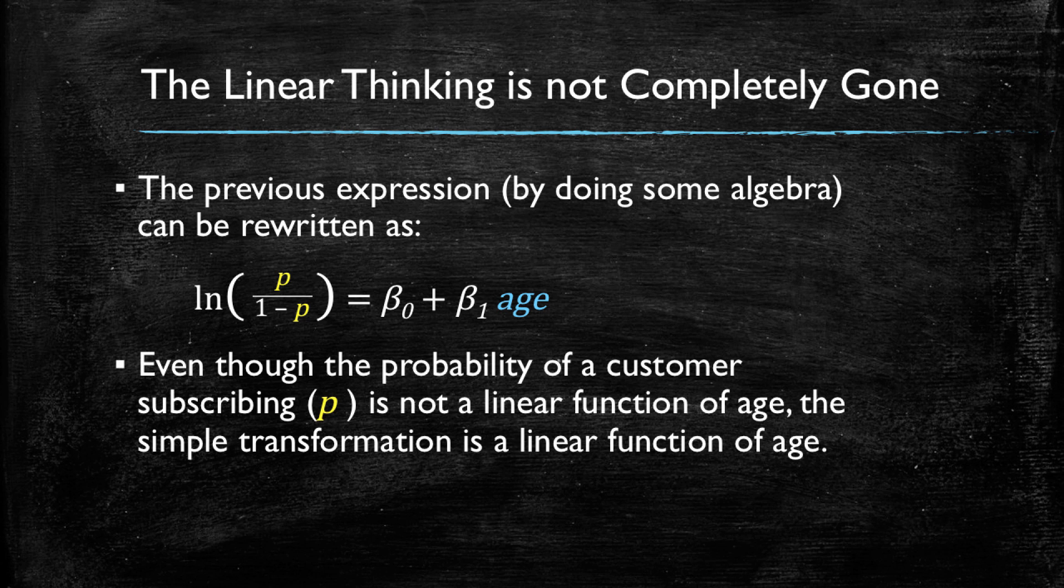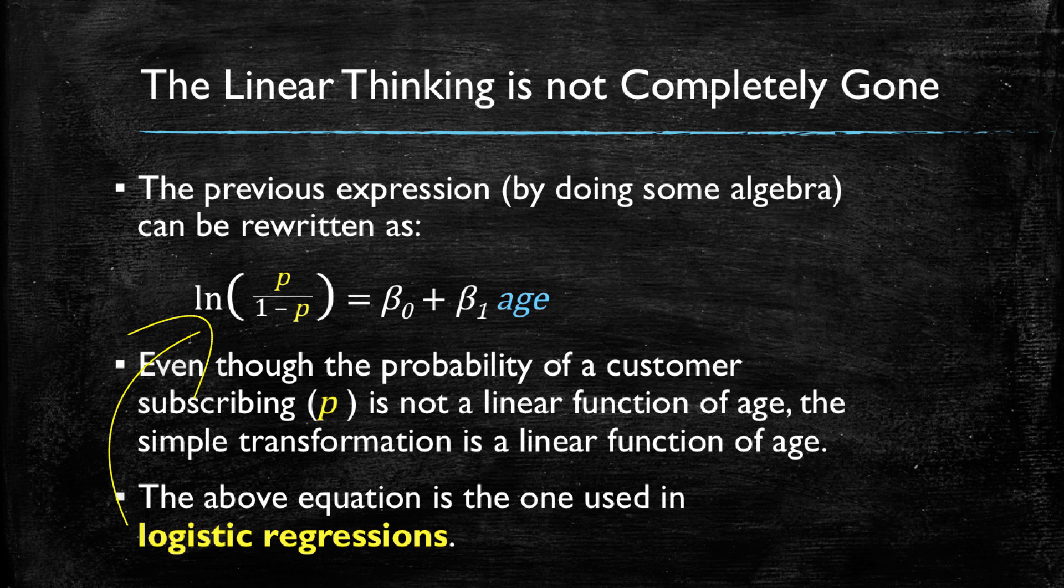So, even though the probability of a customer subscribing is not a linear function of age, we can perform a simple transformation on it such that it is now a linear function of age. The above equation is the one used in logistic regressions.